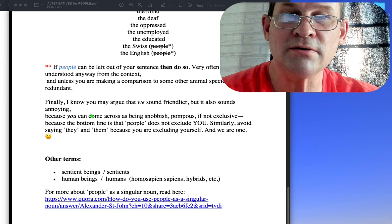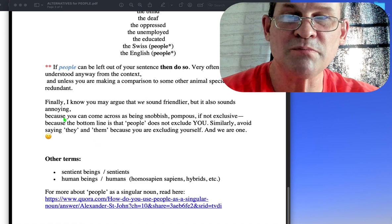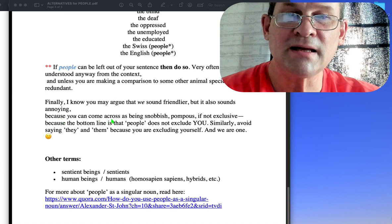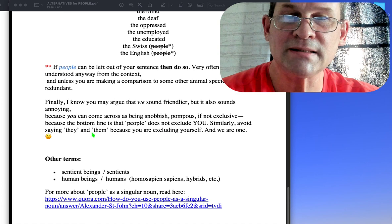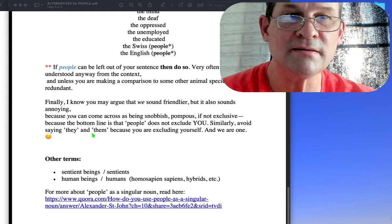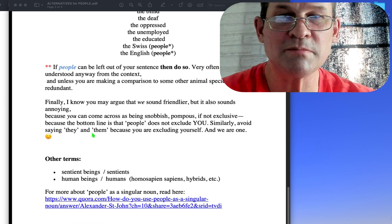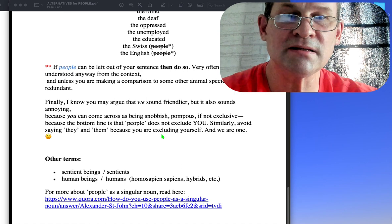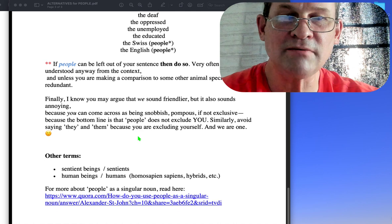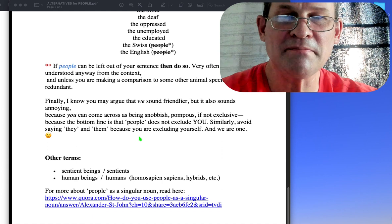Finally, I know you may argue that we sound friendlier, but it also sounds annoying to repeat it all the time because you can come across as being snobbish, pompous, if not exclusive. It's like when we use the word they all the time - they, they, the government, they. We're all in it together, well welcome aboard. The bottom line is that people does not exclude you, and similarly saying they and them makes you excluded from the reality.